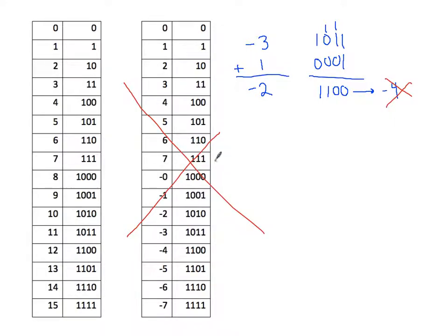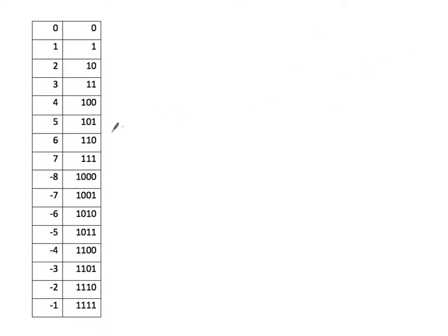The point is that it's not enough to just say the first bit being zero indicates positive and the first bit being one indicates negative, because that doesn't give us an elegant solution for the mathematics. The scheme that solves this is called two's complement. All positive values still have zero as the beginning bit, and negative values have one as the beginning bit.